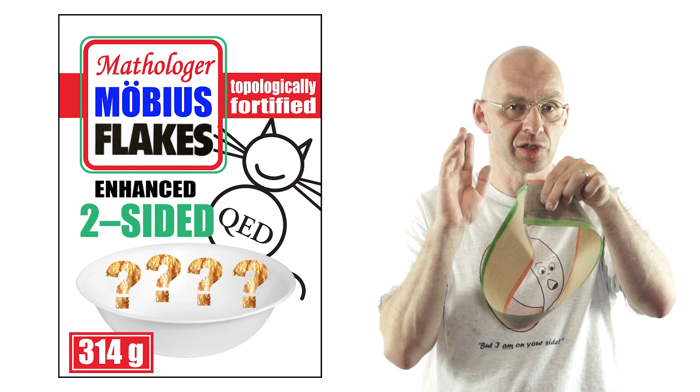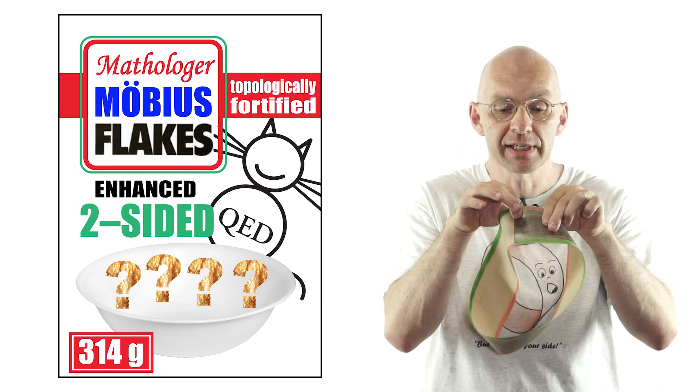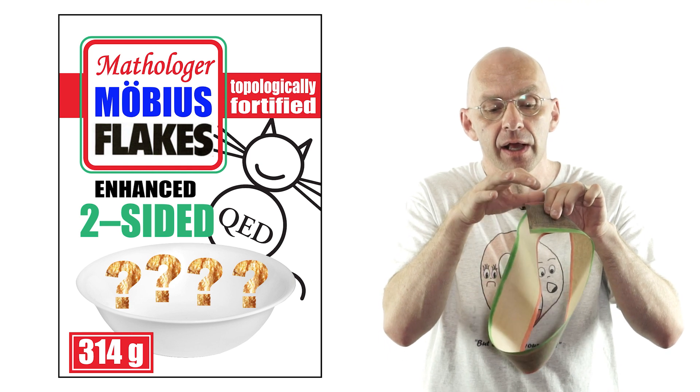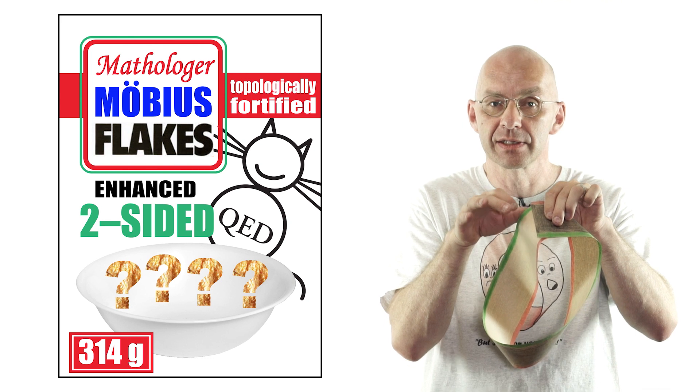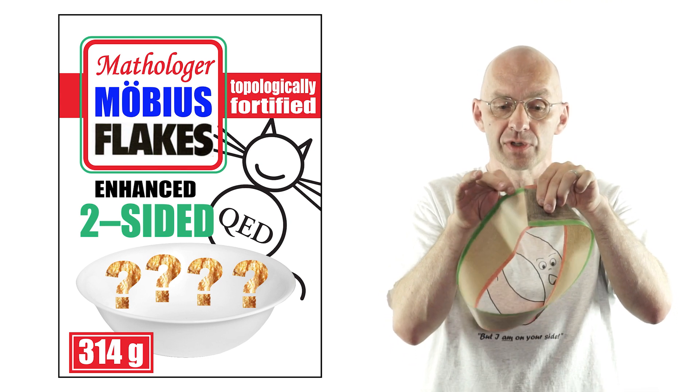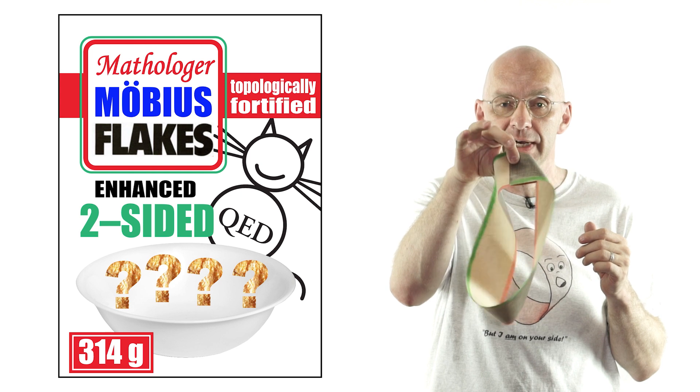Every Möbius strip has just one edge. But as you can see something else happens here. As I bring the ends together also the two sides combine into just one side. So this is a Möbius strip that has one side.